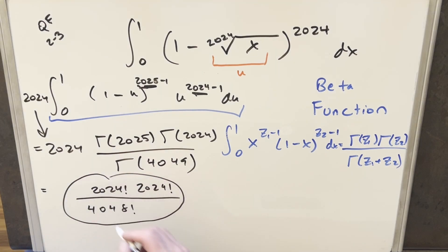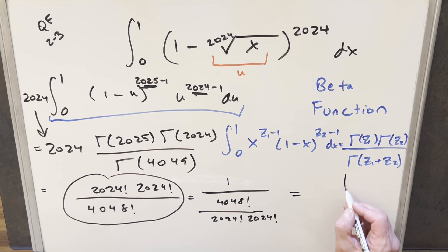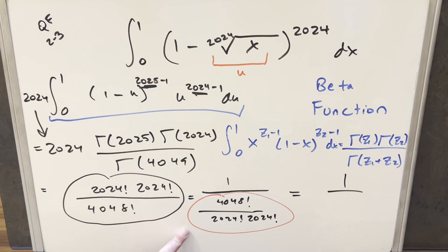And this right here is fine. We can actually leave this, but I'm going to try to get this into the same form they have this in the answer key. So what I'm going to do is flip it, take the reciprocal of this and write it as 1 over 4048 factorial over 2024 factorial. But the reason for doing this, we can rewrite again, just noticing that what we have right here, this piece, this whole thing,